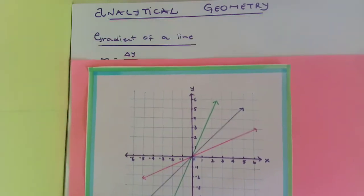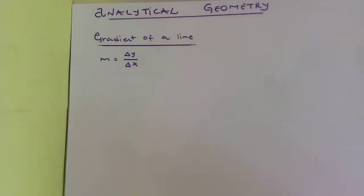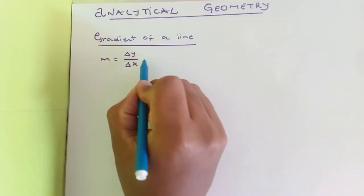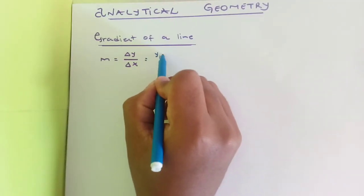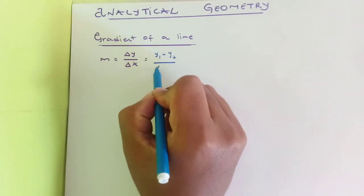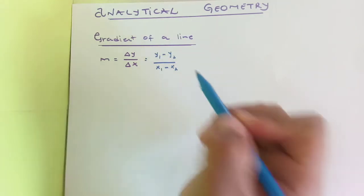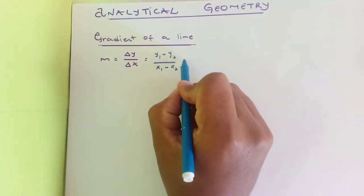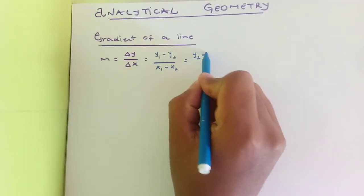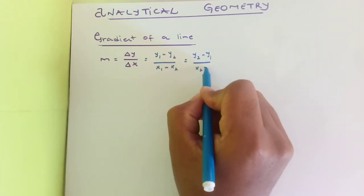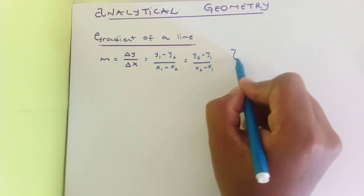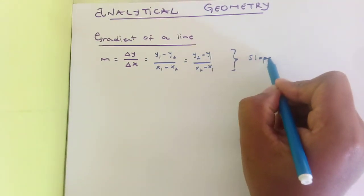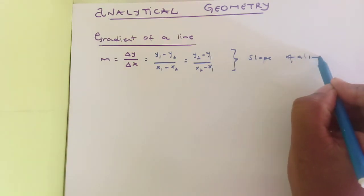The gradient of a line has a formula: the change in the y-values divided by the change in the x-values. Basically, the gradient measures the steepness of a line. The formula is y1 minus y2 divided by x1 minus x2. You can also write it as y2 minus y1 divided by x2 minus x1. This is also called the slope of a line.